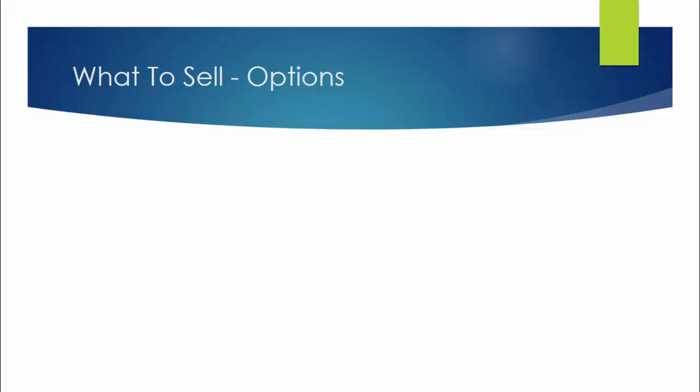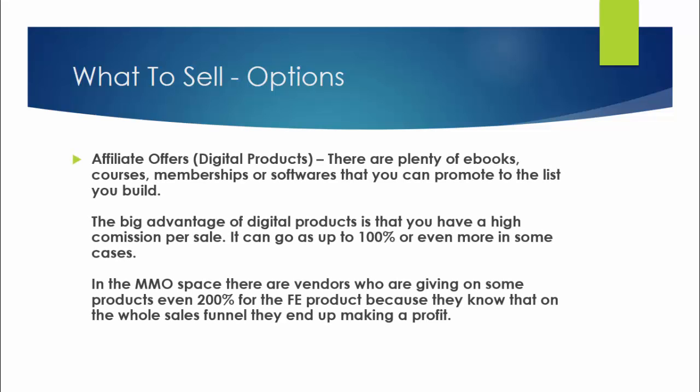First of all, you can sell affiliate offers — but affiliate offers with digital products, not physical products, because physical products have a low commission. Digital products include plenty of ebooks, courses, video courses, email courses, memberships, or software that you can promote to the list you build. The big advantage of digital products is that you have a high commission per sale.